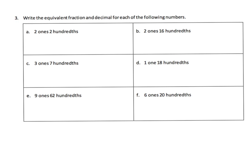Here we're connecting unit form with fractions and decimals. Two ones and two hundredths — what does that look like? The fraction equivalent is two ones, no tenths, and two hundredths. Parents and teachers could use a number bond to break things up and show each part specifically.